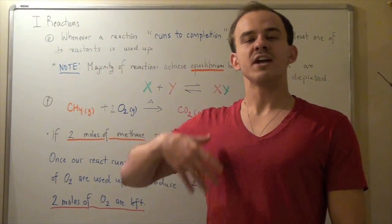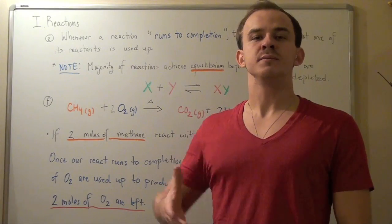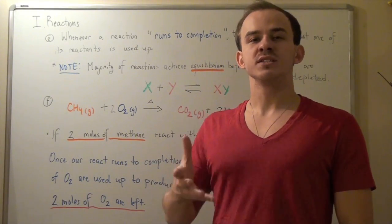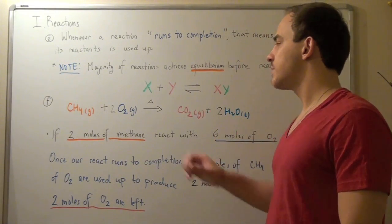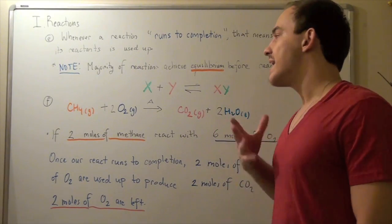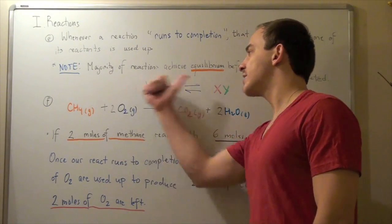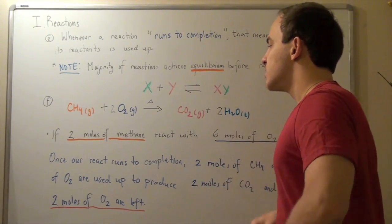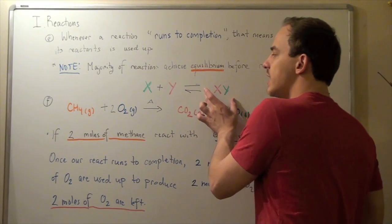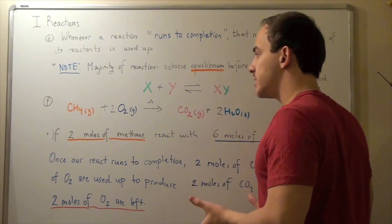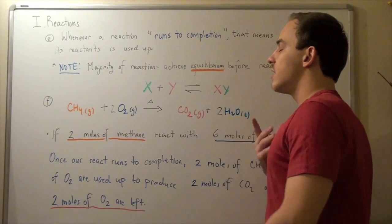Whenever a reaction is said to run to completion, that basically means one of the reactants is completely used up — it's completely depleted. Note, however, that most reactions do not run to completion, because before one of the reactants is used up, equilibrium is established. Suppose the reaction X plus Y reacts to form product XY, and this reaction achieves equilibrium before one of the reactants is used up. That means the forward reaction rate equals the reverse reaction rate, so the concentration of the reactants and product remains the same even though the reactions are occurring, because they occur at the same rate.